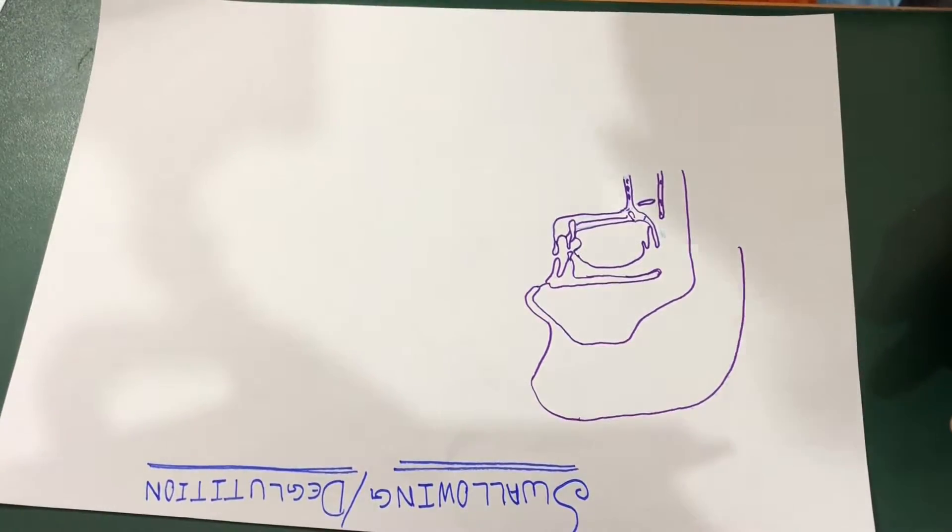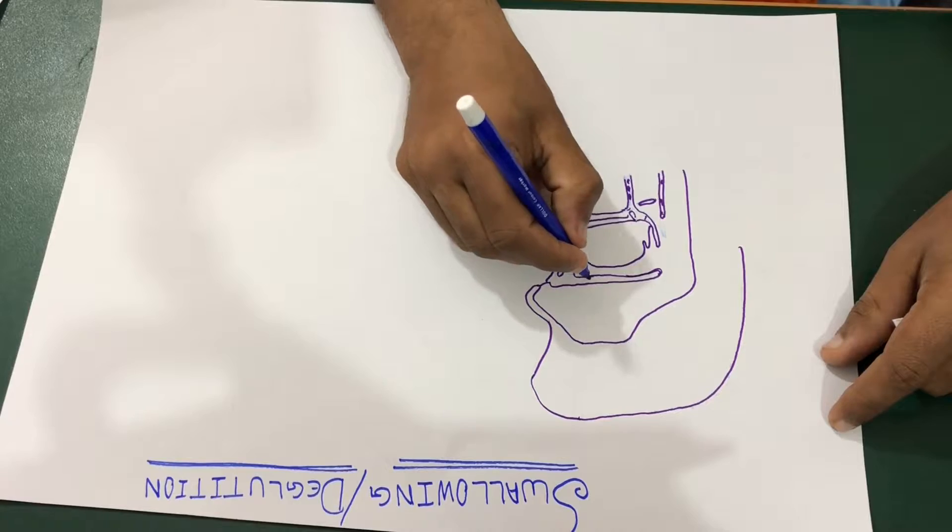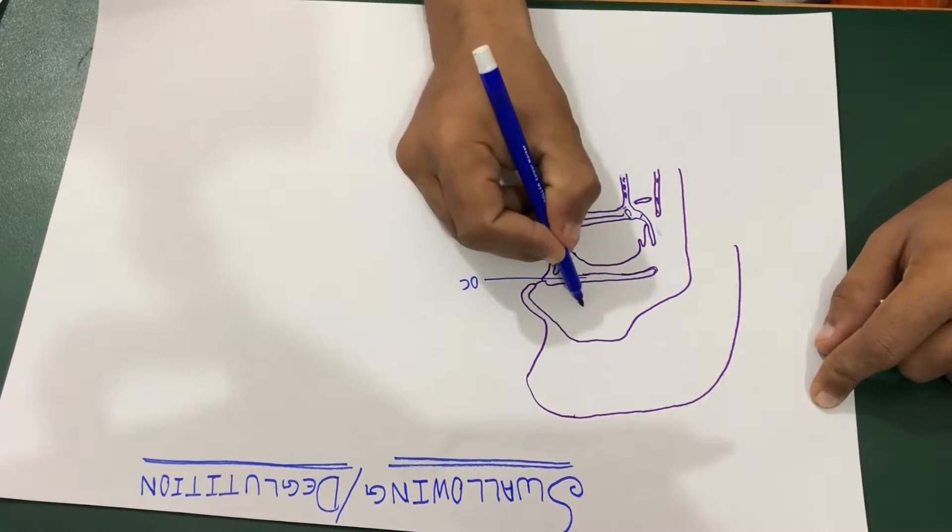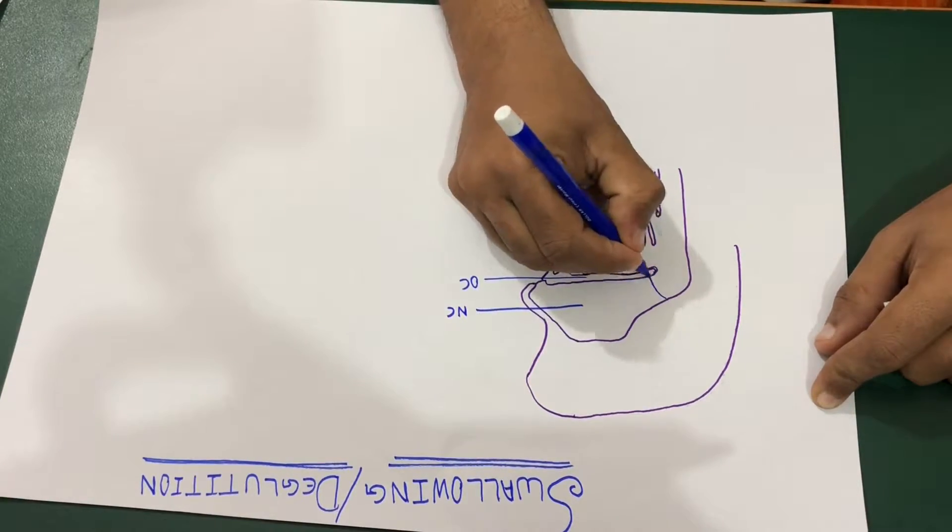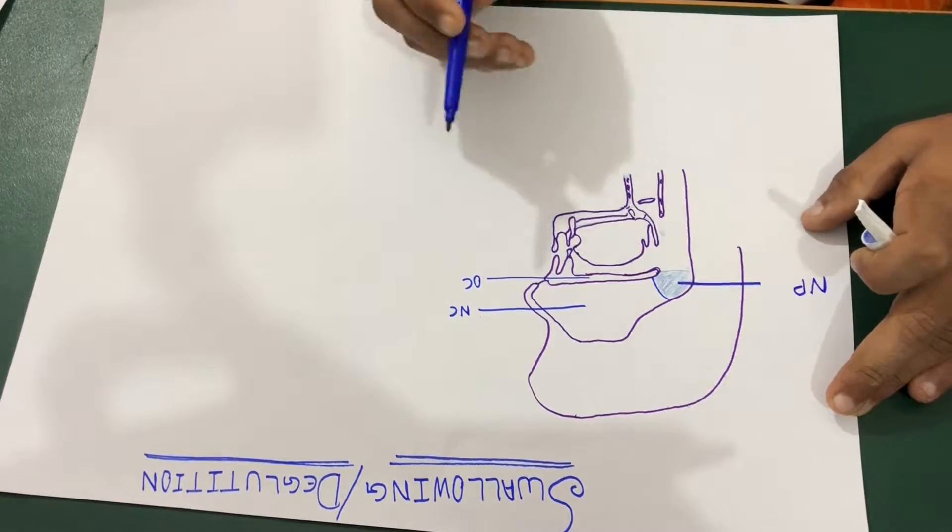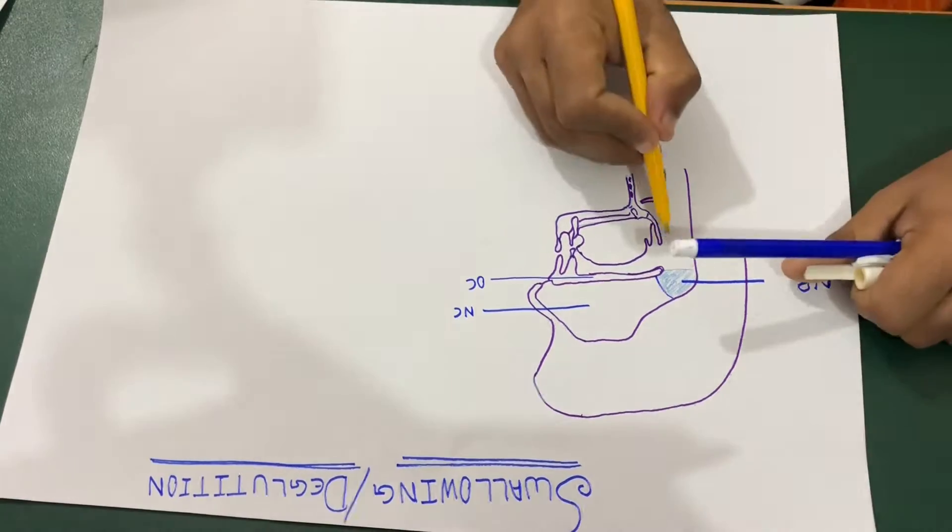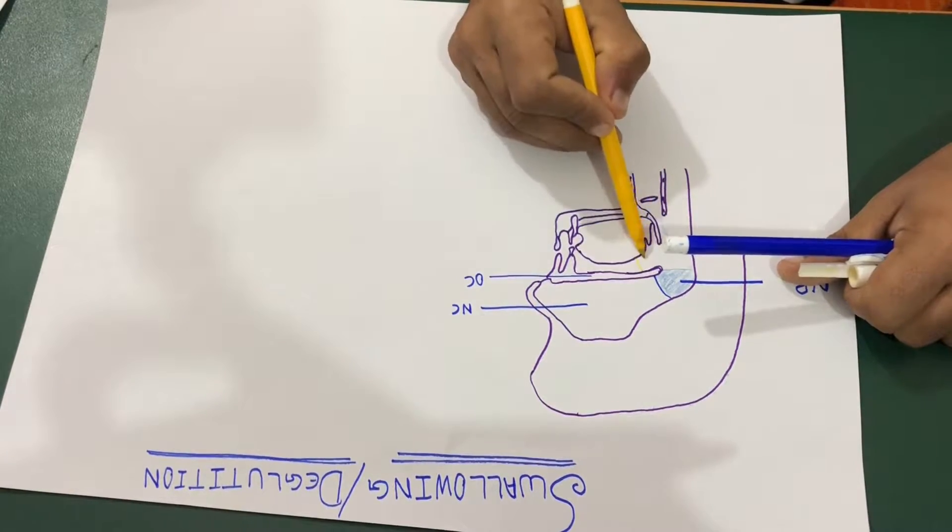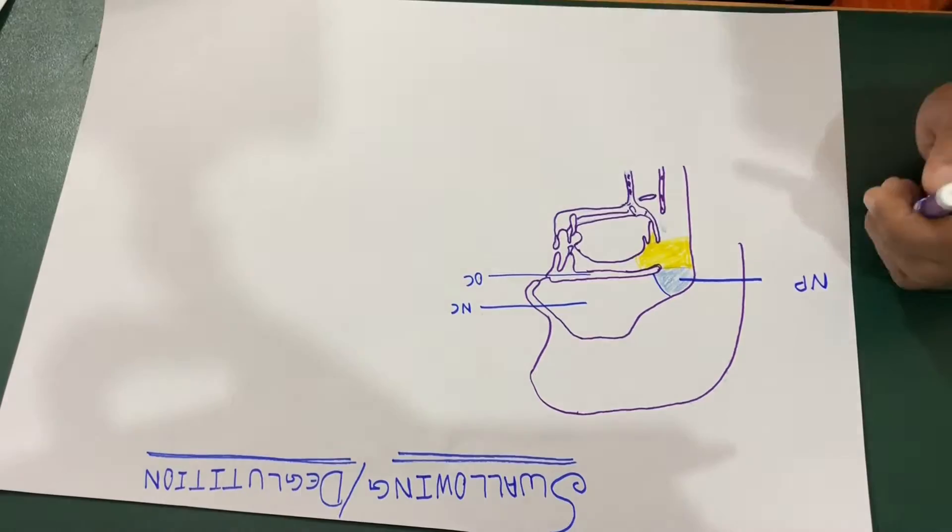This is the oral cavity. The second one is your nasal cavity. The third one is your nasopharynx. The fourth one is your oropharynx.